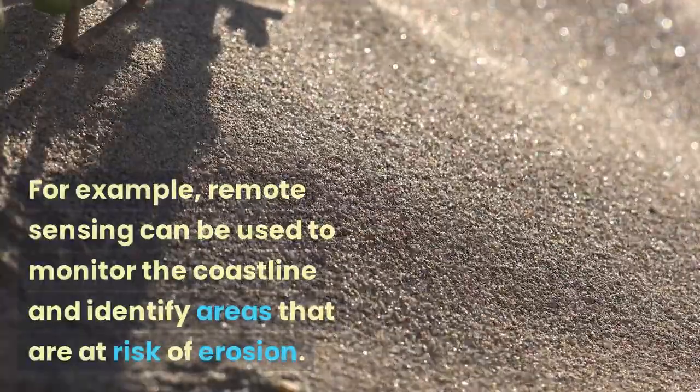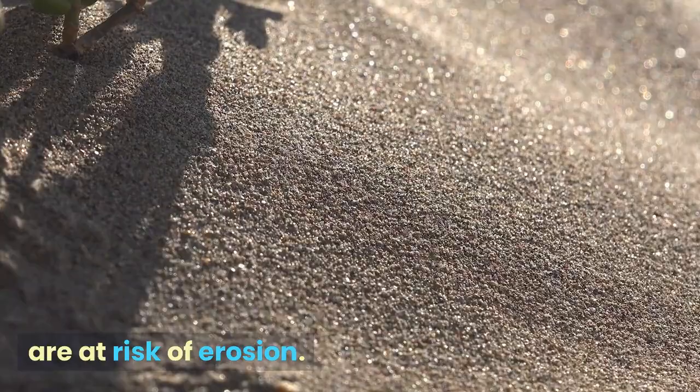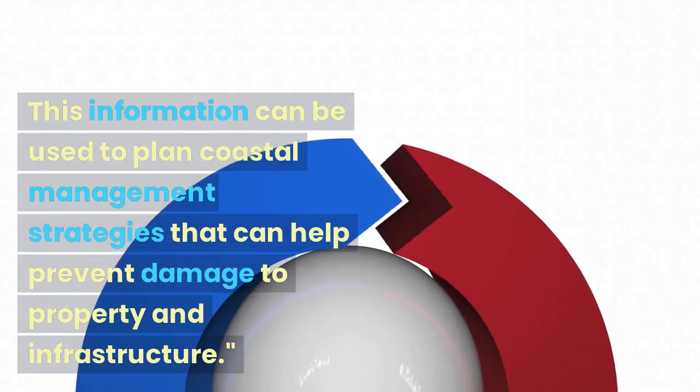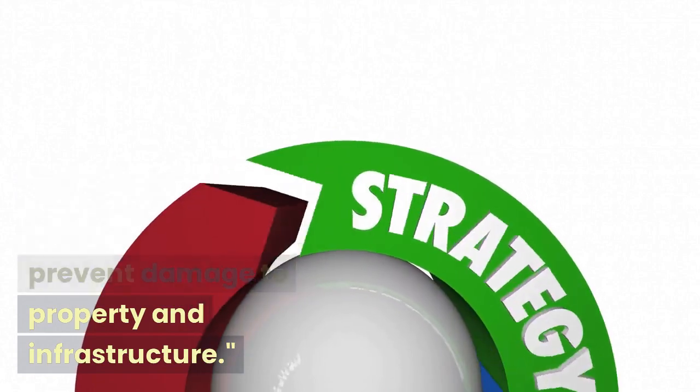For example, remote sensing can be used to monitor the coastline and identify areas that are at risk of erosion. This information can be used to plan coastal management strategies that can help prevent damage to property and infrastructure.